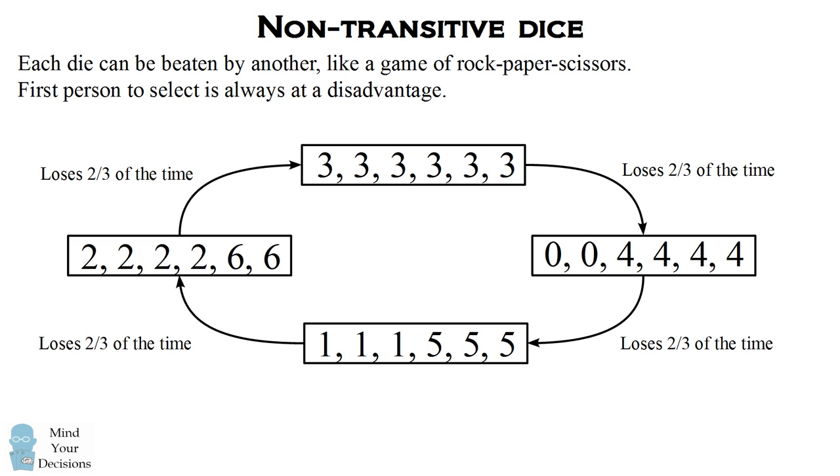As the story goes, Warren Buffett challenged Bill Gates to this and said, go ahead, why don't you select first? Bill Gates was smart enough to say, let me inspect the dice, and he figured out that there was something weird going on with the dice. Did you figure it out?